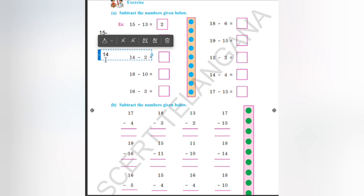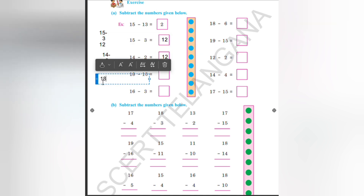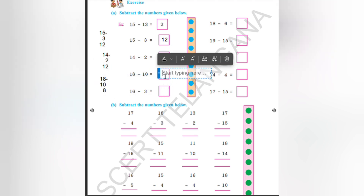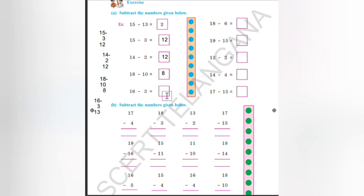Also 14 minus 2. In the next step below 4 we have to write 2. 4 minus 2 is equal to 2, so write 12 here. The third problem: 18 minus 10. So 8 minus 0 is equal to 8 — write 8 here. 16 minus 3: in the next step we write 3 below 6. 6 minus 3 we get 3, so the answer is 13. Write 13 here.